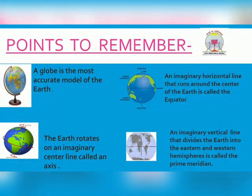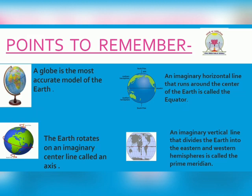Here are important points to remember. 1. A globe is the most accurate model of the Earth. 2. The Earth rotates on an imaginary center line called an axis. 3. An imaginary horizontal line that runs around the center of the Earth is called the equator. The northern half is called the northern hemisphere and the southern half is called the southern hemisphere. This line is exactly halfway between the North Pole and the South Pole.